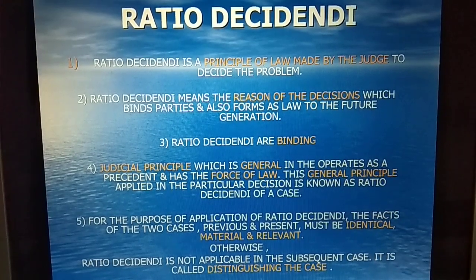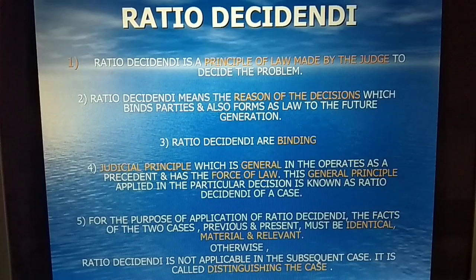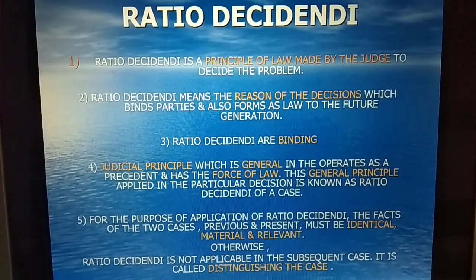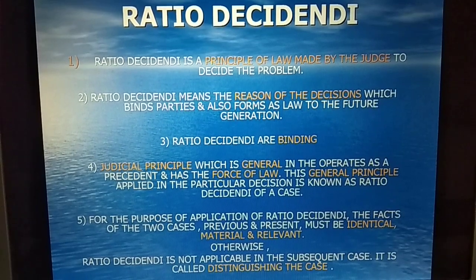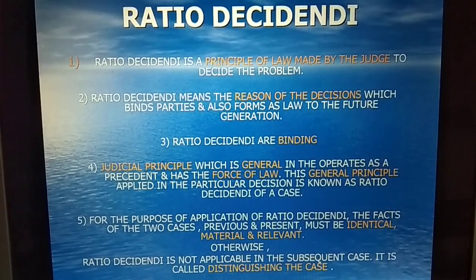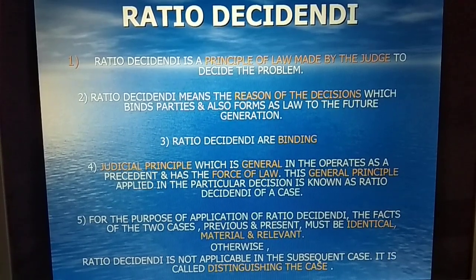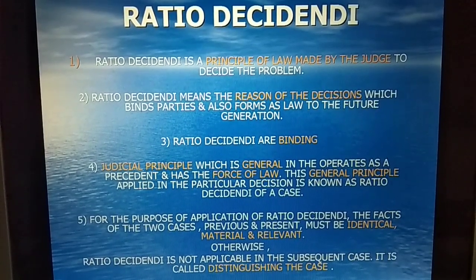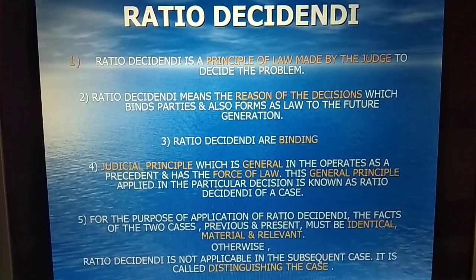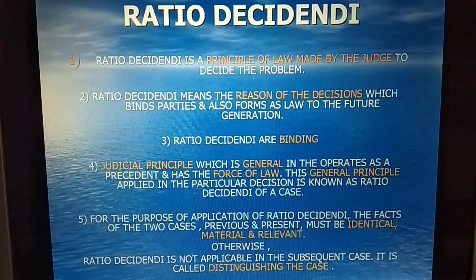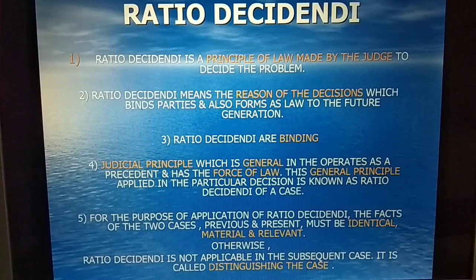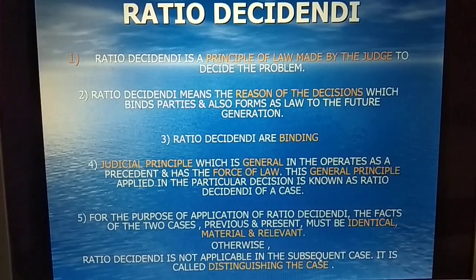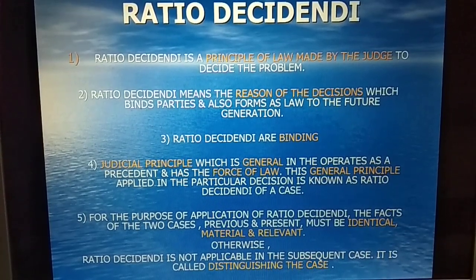facts of the two cases — previous and present — must be identical, material, and relevant. That is, if there is any case previously decided and now it is going to be decided on the same facts, those facts should be identical, material, and relevant. If ratio decidendi is not applicable in the subsequent case, it is called distinguishing the case.